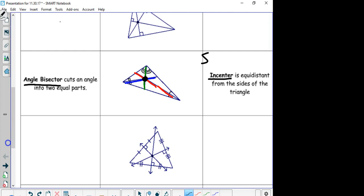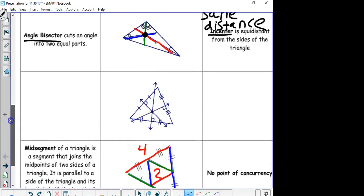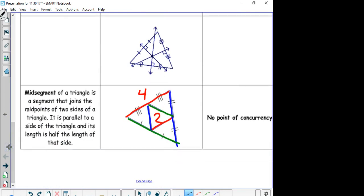It's equidistant from the sides of the triangle. Equidistant—what does it mean? It means same distance. And one more word we talked about today. That word is the midsegment of a triangle. A midsegment of a triangle is a segment that joins the midpoint of two sides of a triangle. It is parallel to a side of the triangle.